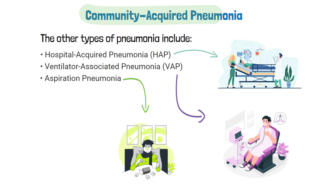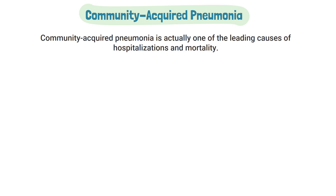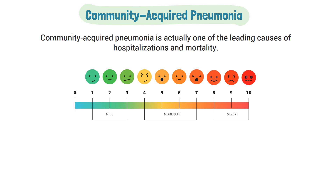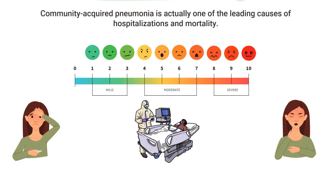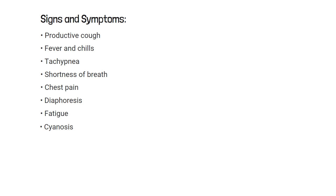Community acquired pneumonia is actually one of the leading causes of hospitalizations and mortality. It can vary from mild to severe depending on the patient's signs and symptoms. Some examples to look for include a productive cough, fever and chills, tachypnea, shortness of breath, chest pain, diaphoresis, fatigue, and cyanosis.